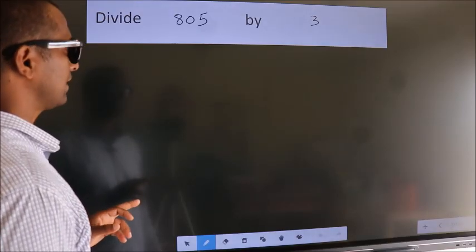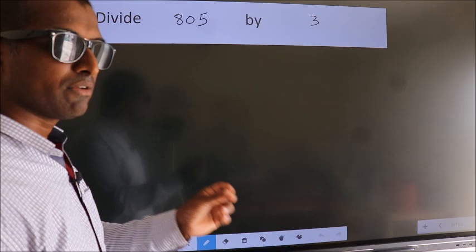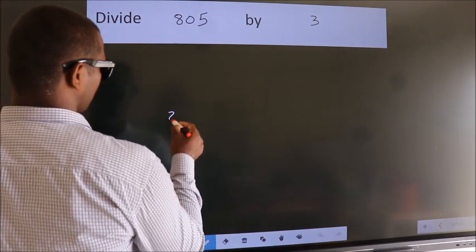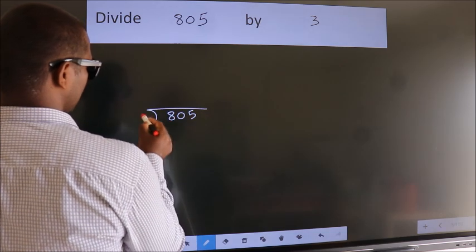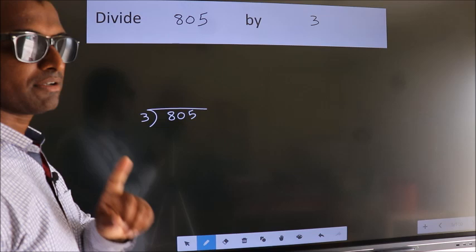Divide 805 by 3. To do this division, we should frame it in this way. 805 here, 3 here. This is your step 1.